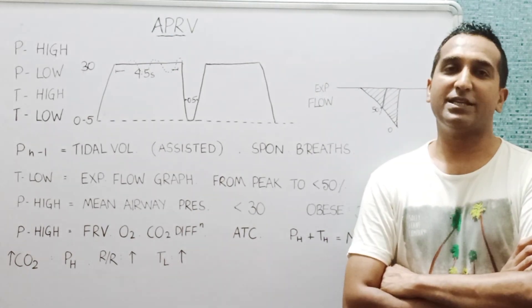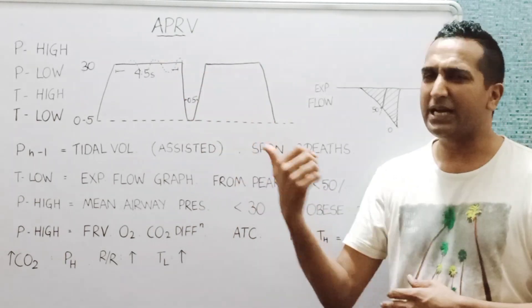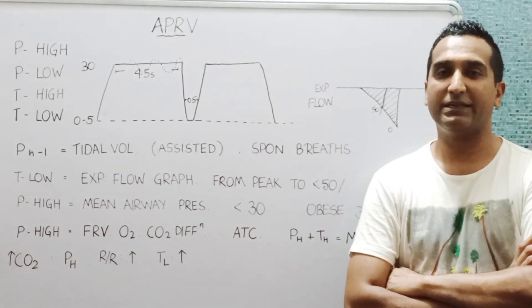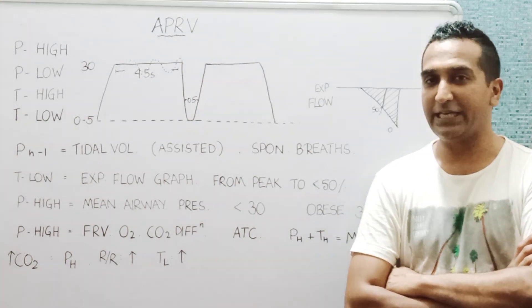This is like an inverse ratio of ventilation where the ratio between the P high and the P low is generally 9 to 10 is to 1 to begin with, and then we manipulate it further as per our needs.